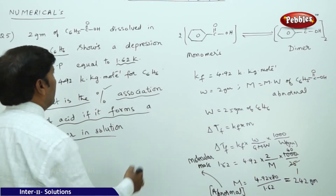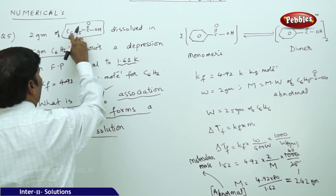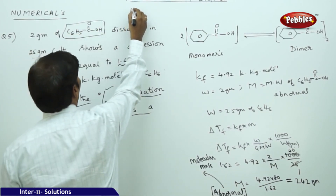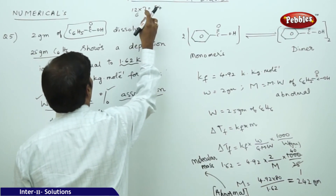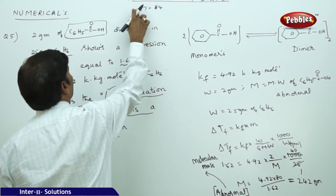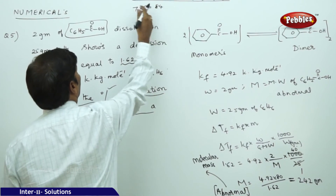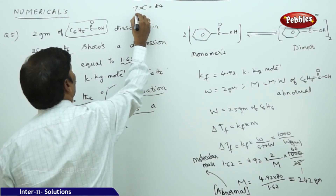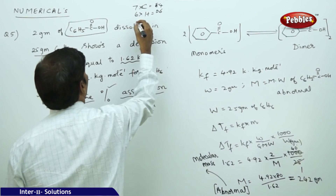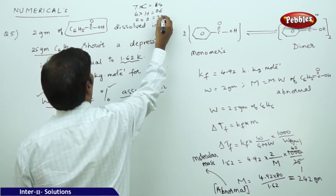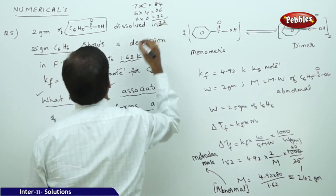Step 2: Apply the Van't Hoff factor i = normal molecular mass / abnormal molecular mass. The normal molecular weight of benzoic acid (C₇H₆O₂): 7 × 12 = 84 (carbon) + 6 × 1 = 6 (hydrogen) + 2 × 16 = 32 (oxygen) = 122 grams per mole. Therefore i = 122 / 242 ≈ 0.504.